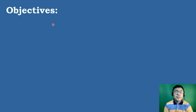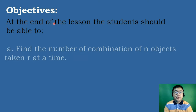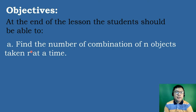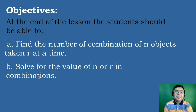These will be our objectives for today. Letter A: find the number of combinations of n objects taken r at a time. And letter B: solve for the value of n or r in combinations.